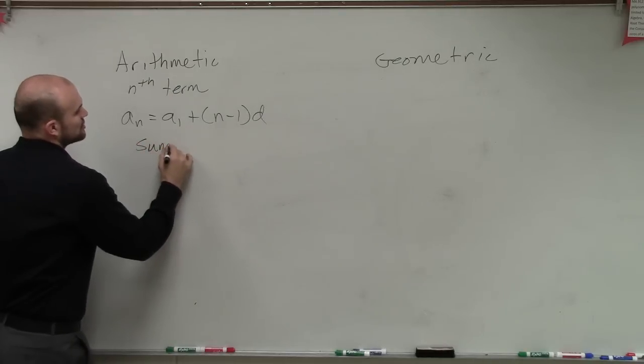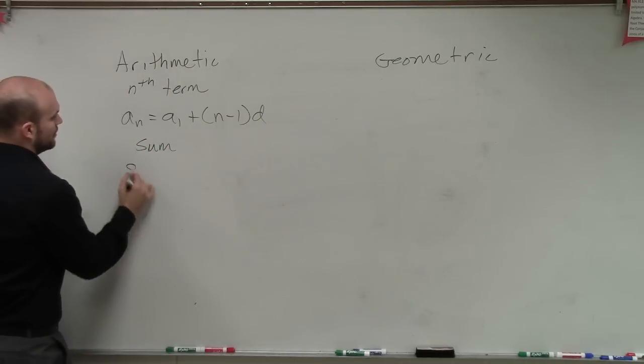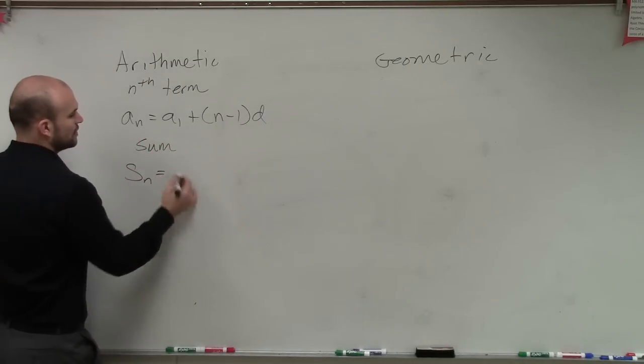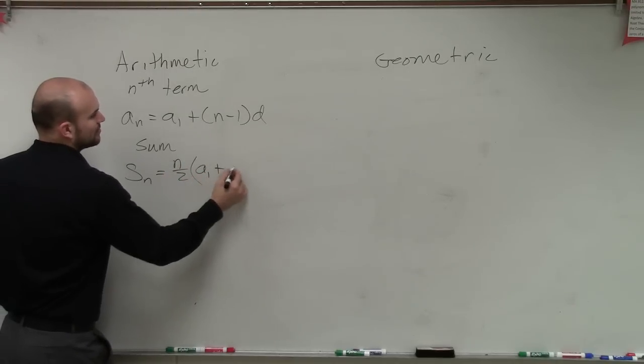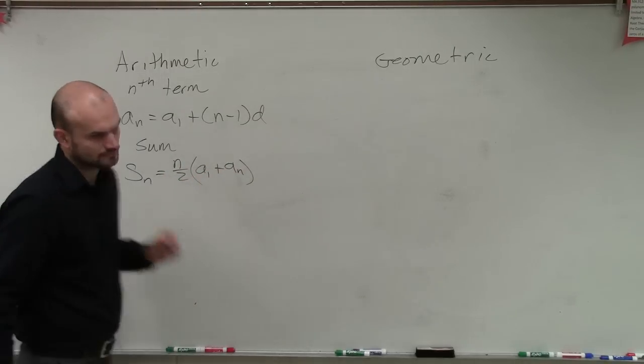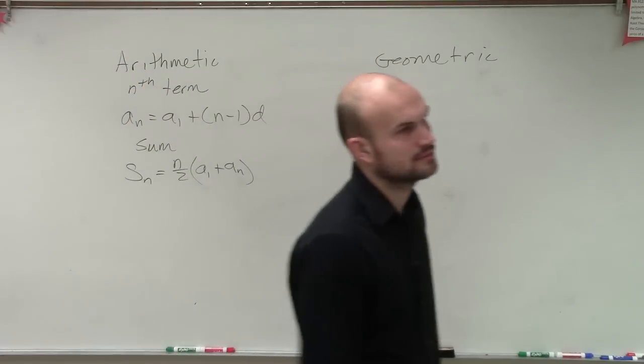If we're going to look at a partial sum, we have s of n equals n divided by 2 times a sub 1 plus a sub n.